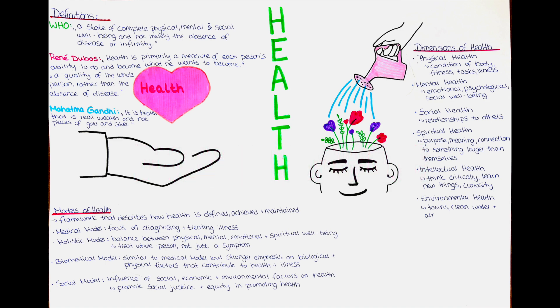What are dimensions of health? Dimensions of health help to provide a more comprehensive understanding of health beyond just the absence of disease. Some common dimensions include physical health, which refers to the condition of the body, including the absence of disease or illness, fitness level and ability to perform physical tasks.